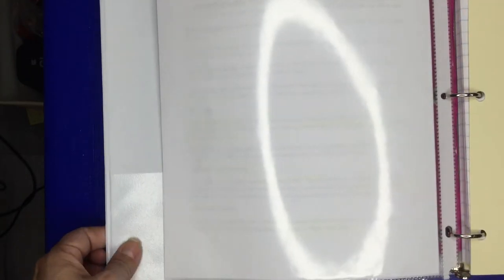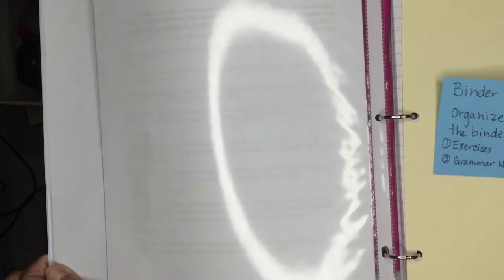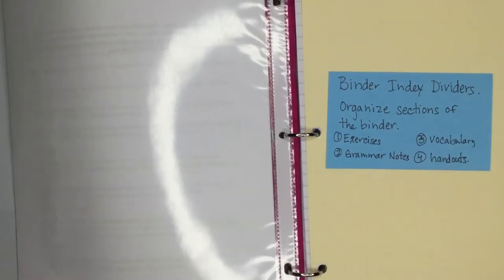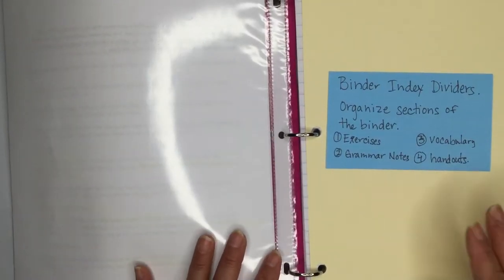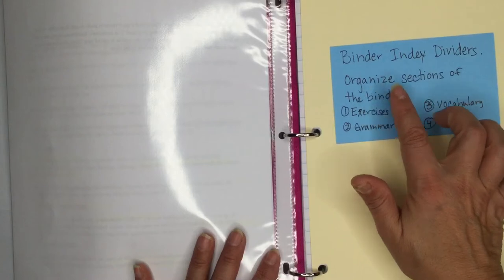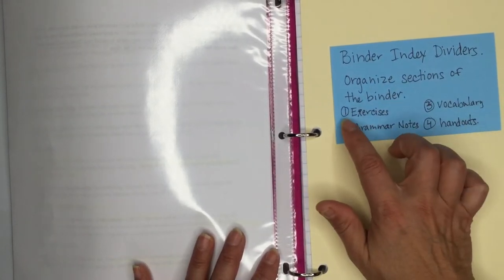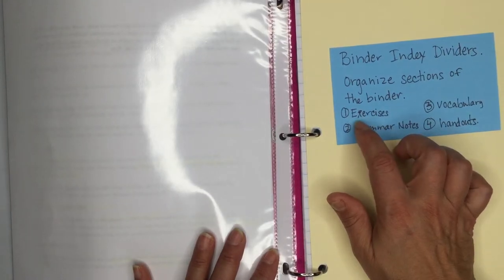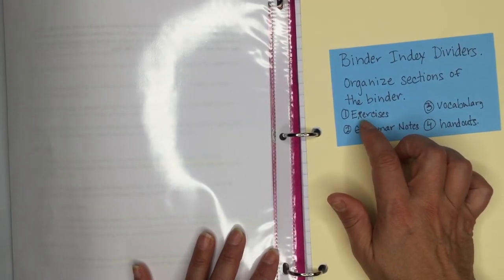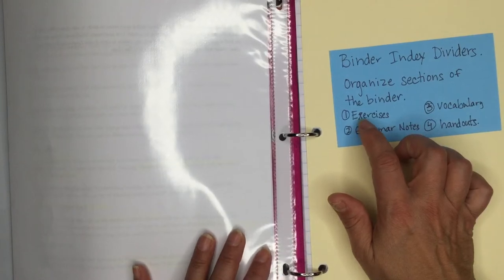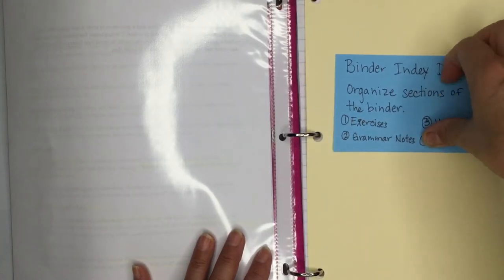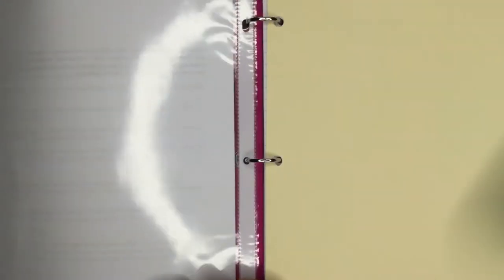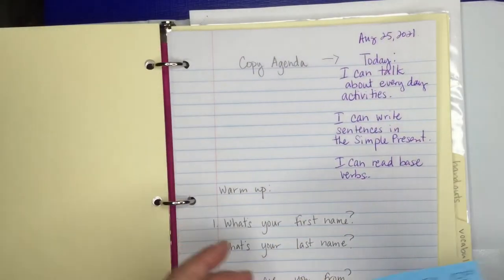Okay, next I'm going to need those binder index dividers. And this is where you really organize your papers. So you have to have places where you put everything. The first place is I put all of my exercises—that's my sentences or questions that I copy from the board, any work my teacher needs me to do, any writing work. I put it in my first part, so I write 'Exercises.'